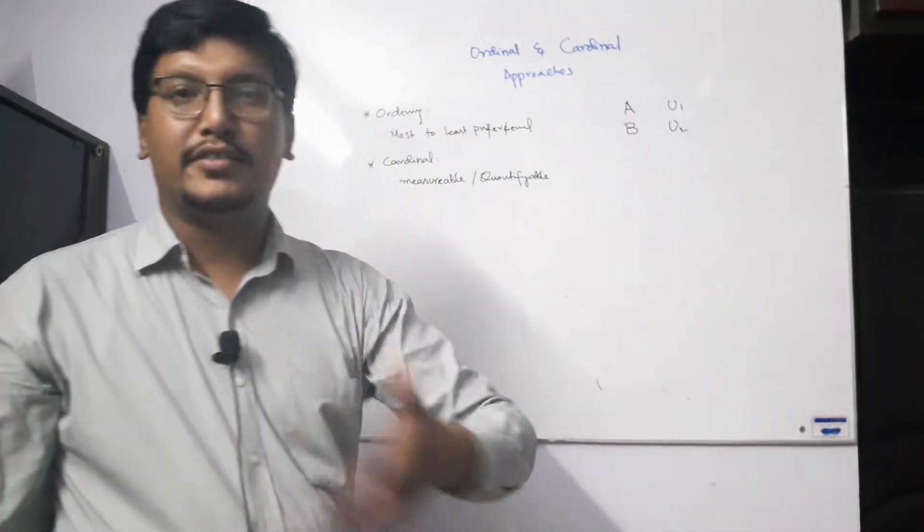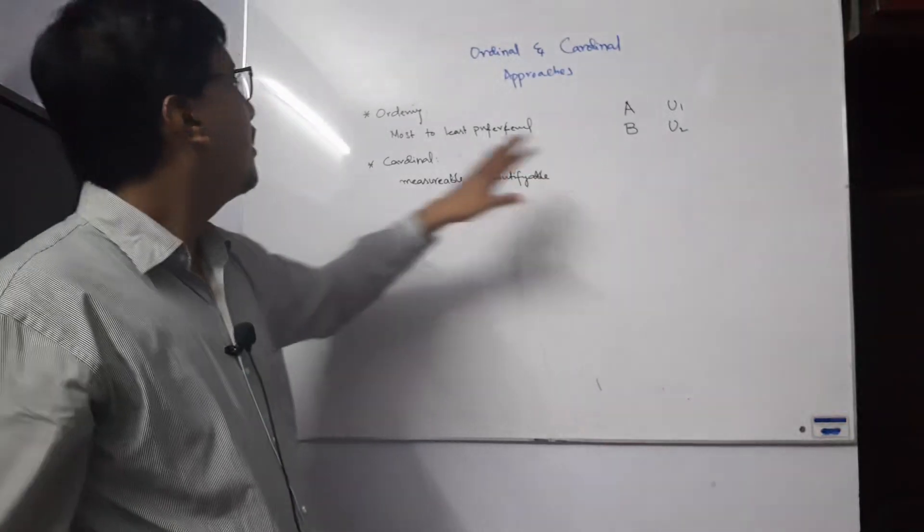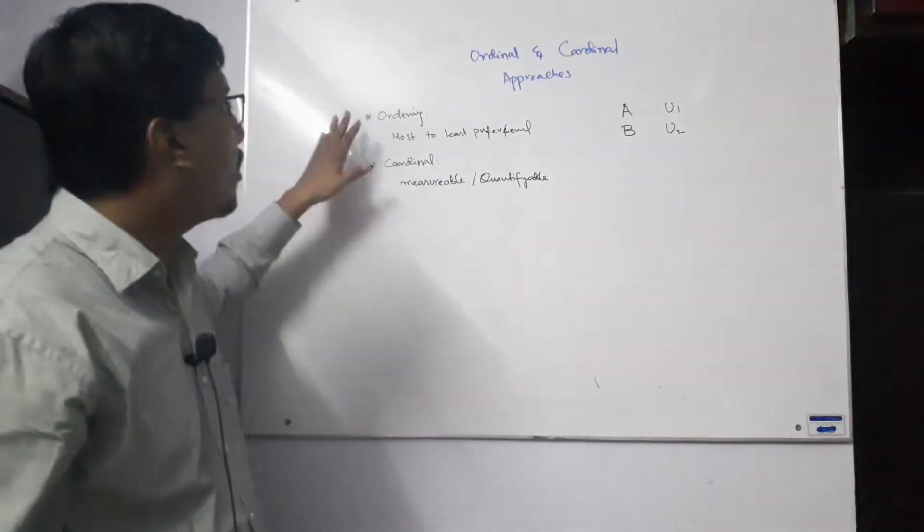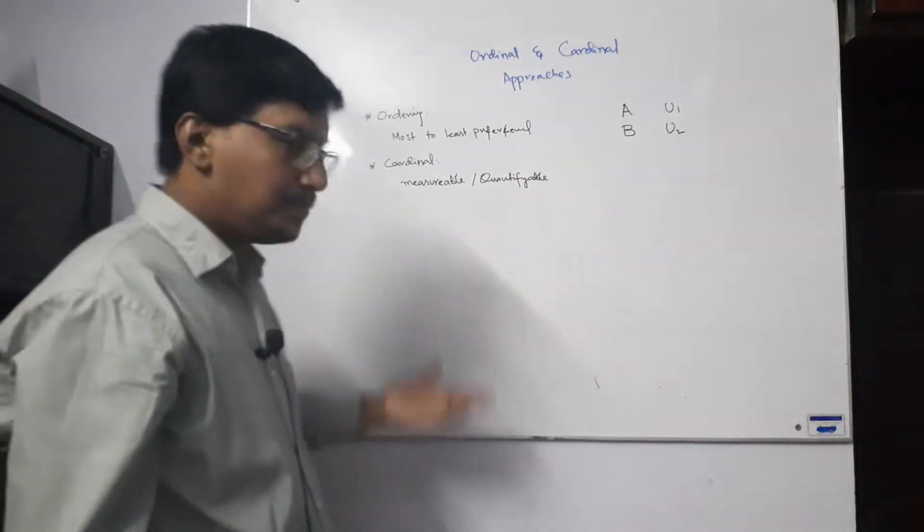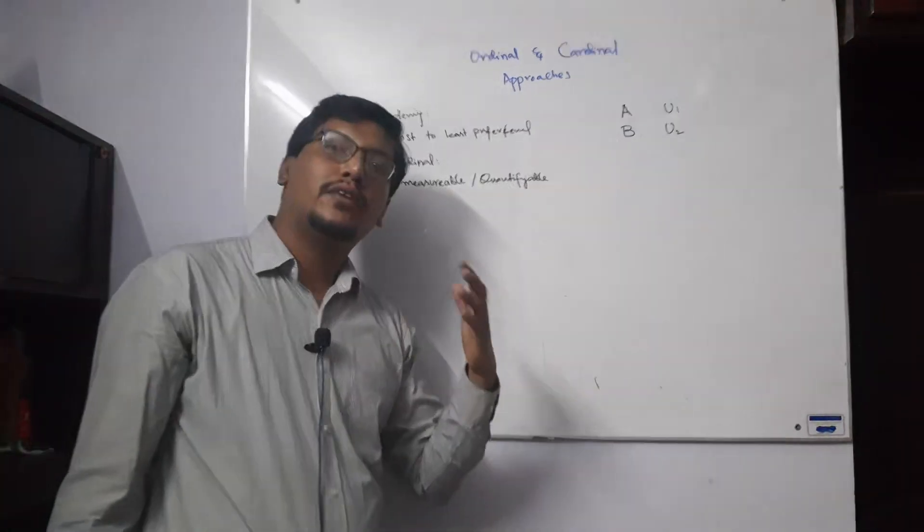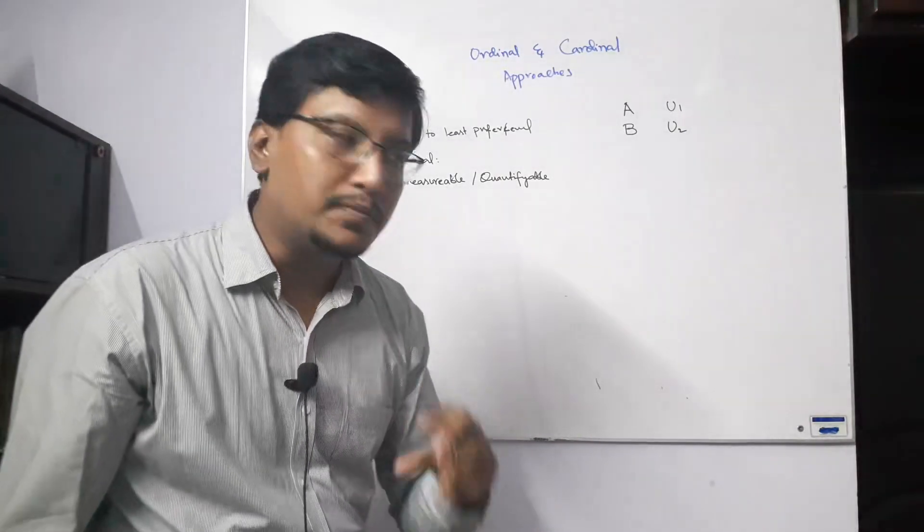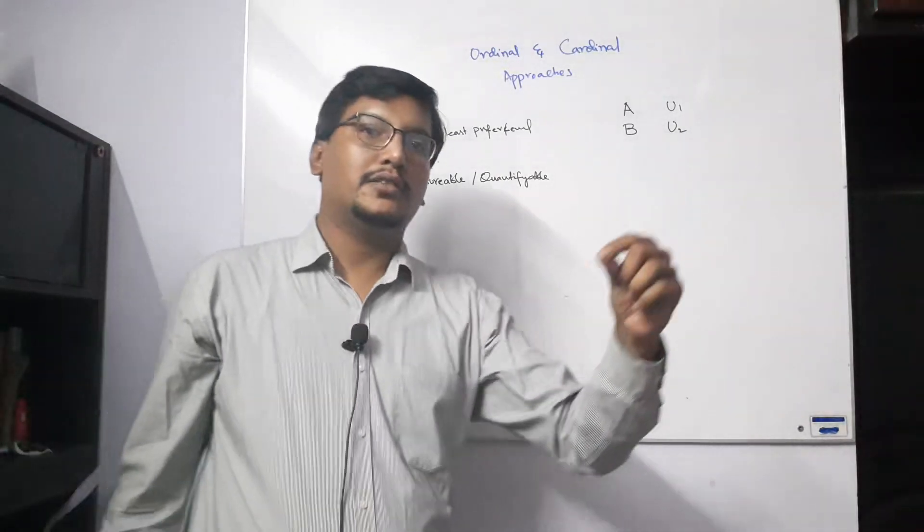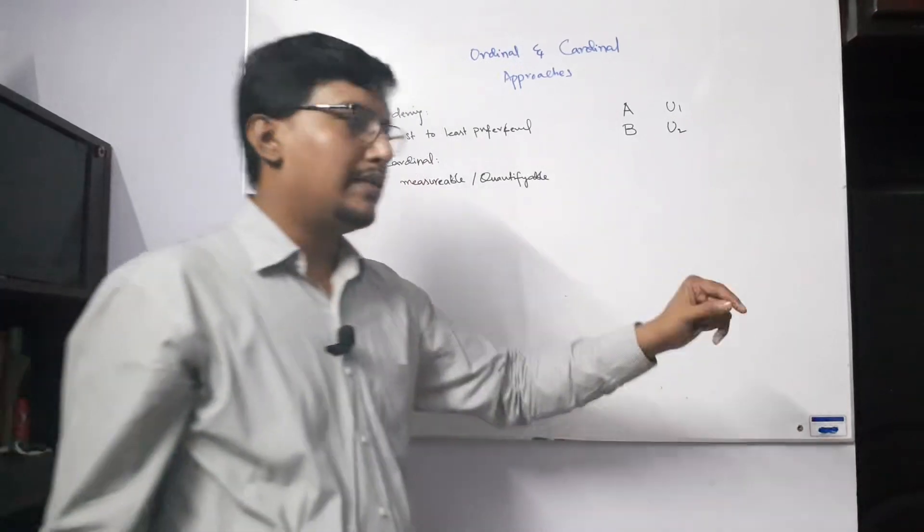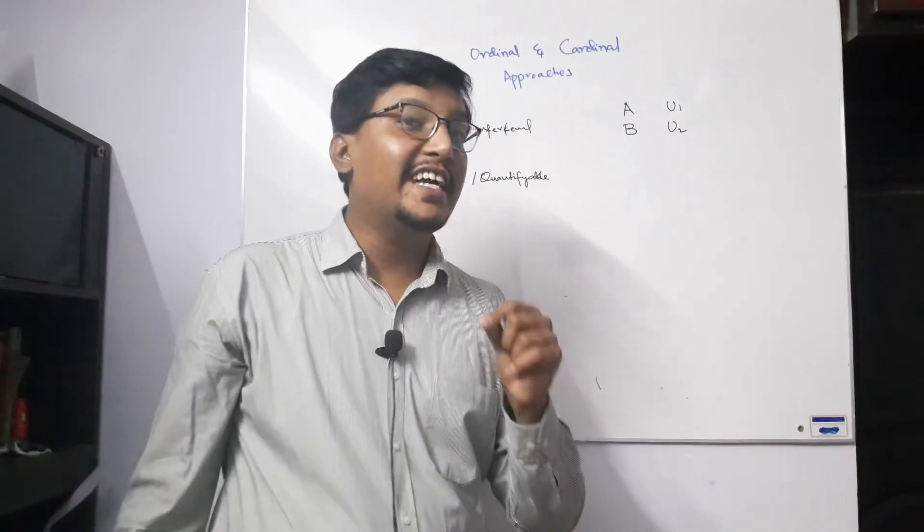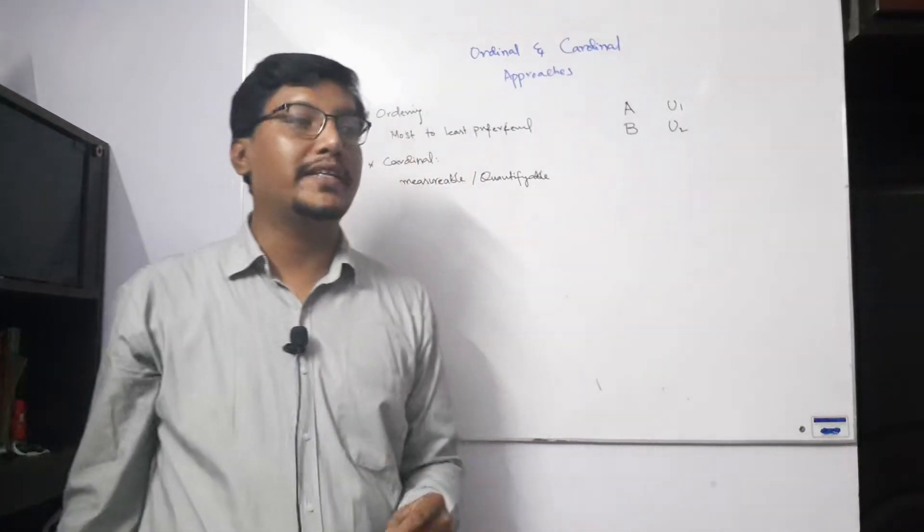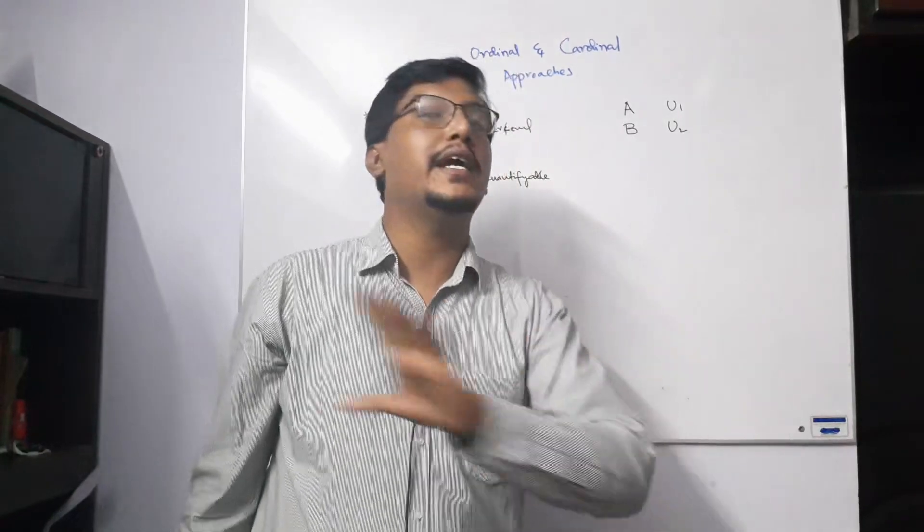So these orders basically can be the ordering approach or ordinal approach, in which they rank items. I drank five glasses of juice - this one I liked the best, then this one, then this one. But they are not showing that A and B both are not showing how much utility they received.